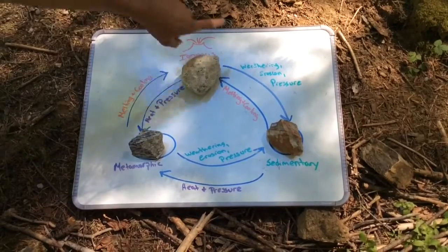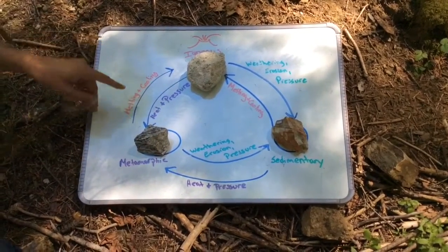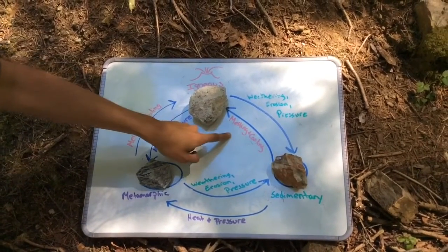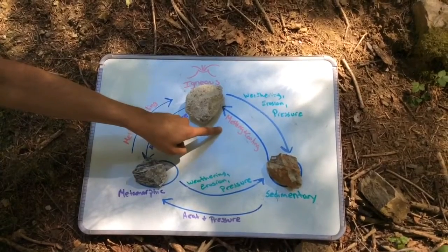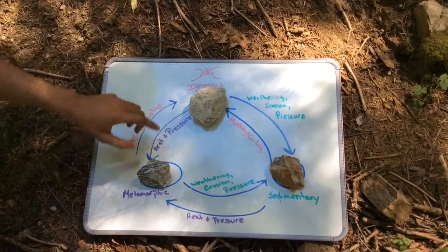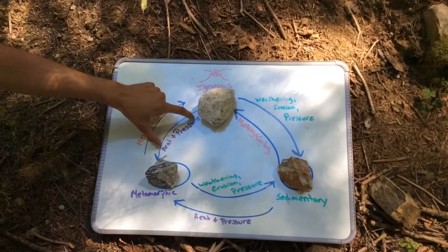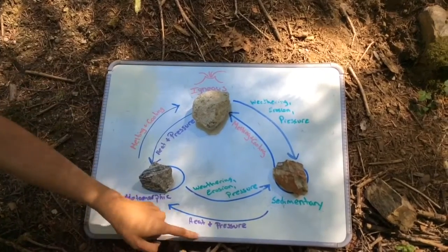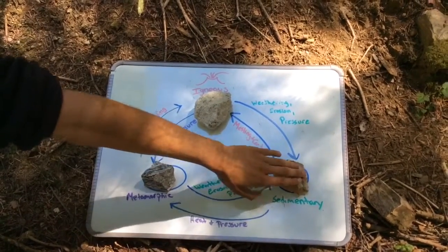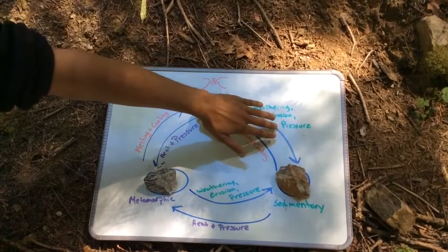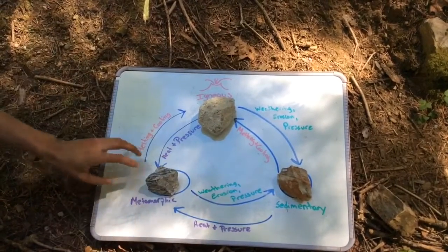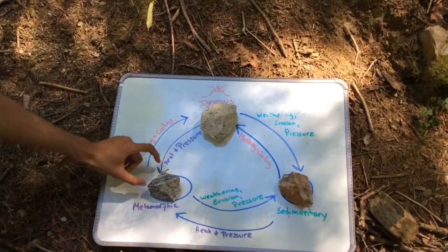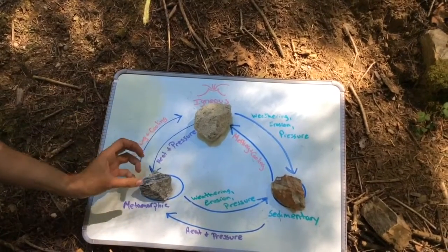Here is a diagram of everything we went over today about the rock cycle. Igneous is formed by melting and cooling, and it can come from sedimentary rocks or metamorphic rocks. Metamorphic rocks are formed from heat and pressure deep within the earth, and can come from igneous or sedimentary. Sedimentary rocks are formed from weathering, erosion, and pressure, and can come from any rock type. Rocks can even reform from the same type — metamorphic rock can undergo heat and pressure again and change to a new metamorphic rock. It's not one set cycle, but a constant moving from one type to another.